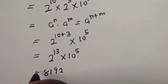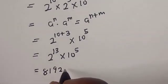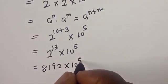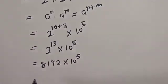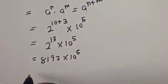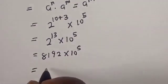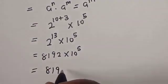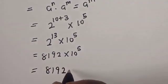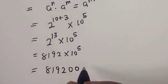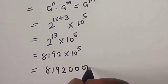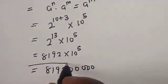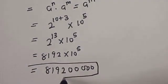And 2 raised to power 13 is 8192, so multiplied by 10 raised to power 5. Our final answer is 819,200,000.